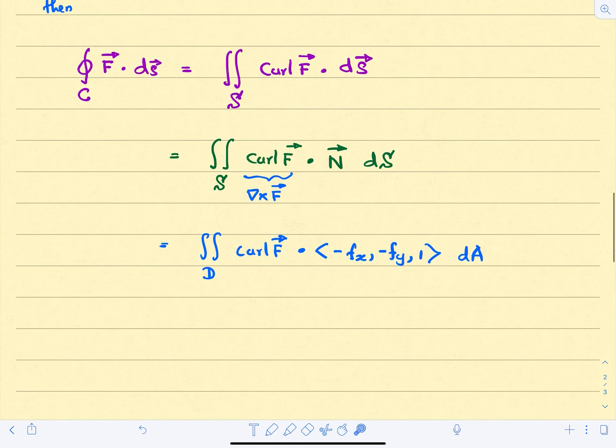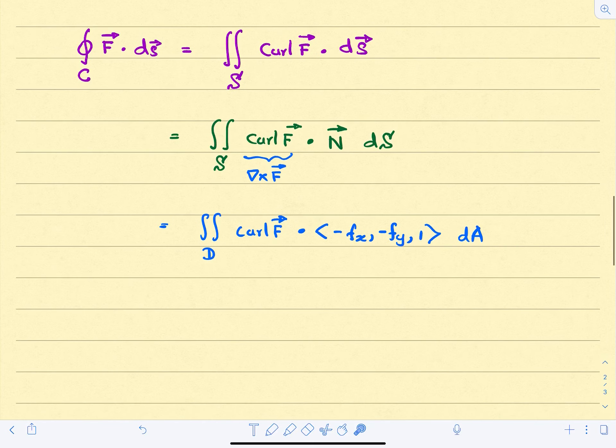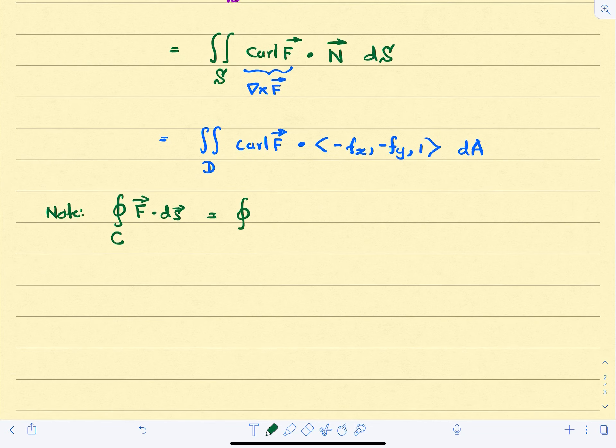And sometimes we can write this line integral, the left hand side can be represented using this notation. Some authors use, let's make a note. This line integral F dot dS over the curve C is the same as the differential form P dx plus Q dy plus R dz. We use this differential notation in chapter 13.2 to represent a line integral.